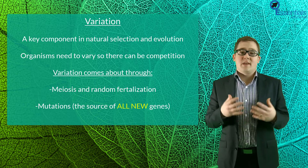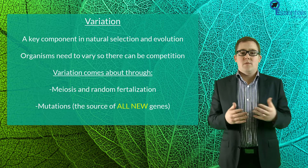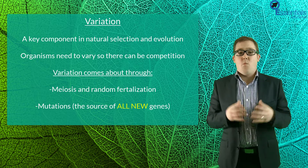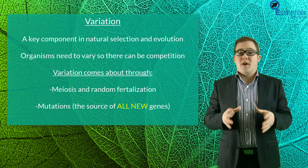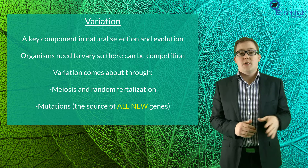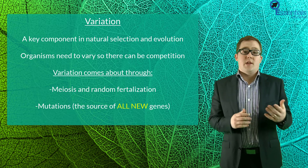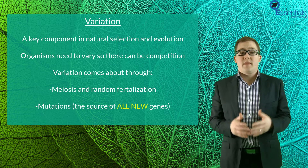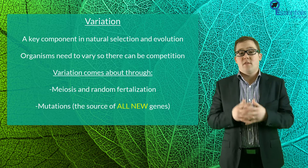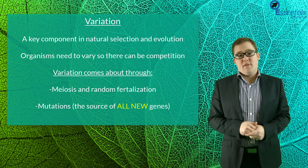Before we delve into evolution, let's take a look at how organisms vary, because variation is a key factor in evolution. There are a number of different processes which result in variation of organisms, and one which results in the development of entirely new genes. In sexually reproducing organisms, variation comes about through meiosis and random fertilization, which has been studied earlier in this course, and results in offspring that are a mix of genes of the parents. For a bigger summary of these, please refer back to our video on meiosis.